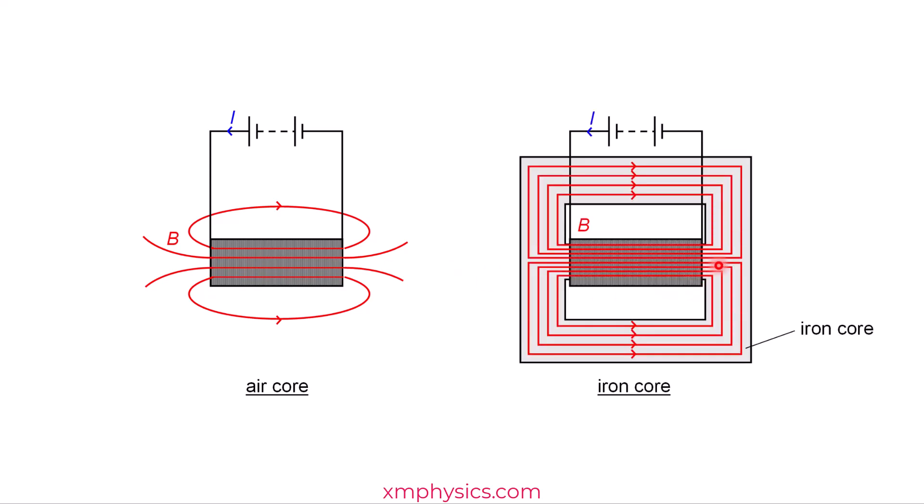But if you insert some iron into the solenoid, we now have what is an iron core solenoid. And the magnetic flux density of an iron core solenoid is much, much stronger than the air core solenoid.